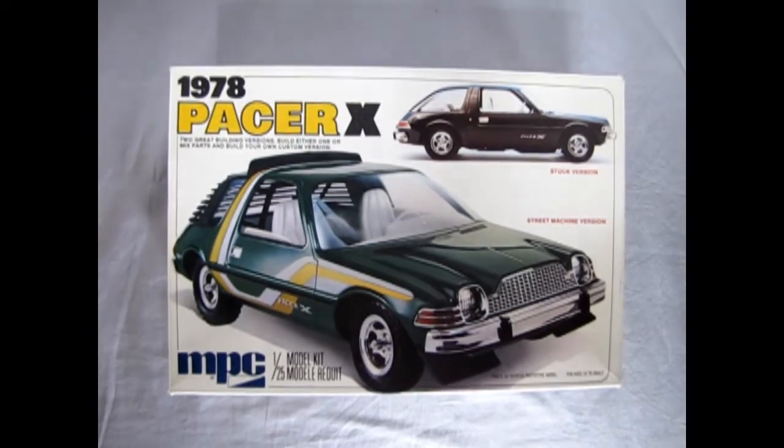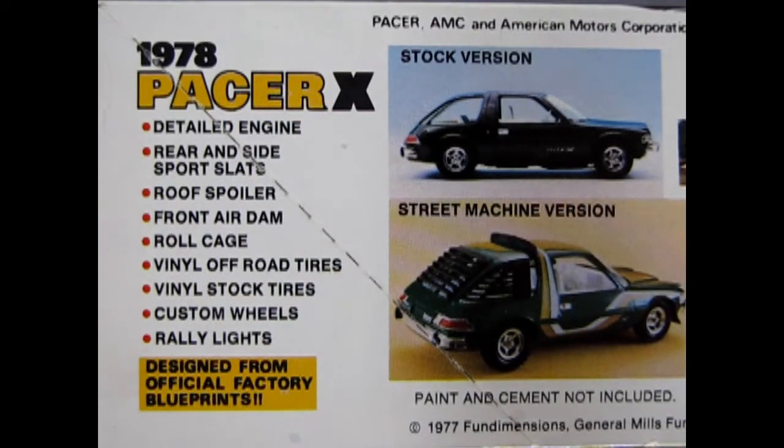So now let's jump back to 1978 where we get to check out the amazing Pacer X by MPC. The 1978 Pacer X comes with a detailed engine, rear side spoiler slats, roof spoiler, front air dam, roll cage, vinyl off-road tires, vinyl stock tires, custom wheels, rally lights and it is designed from official factory blueprints.